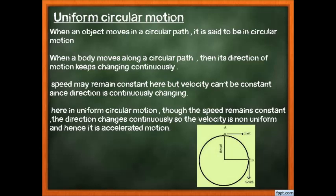In uniform circular motion, the speed remains constant but the direction changes continuously, so velocity is non-uniform. Therefore it is accelerated motion. Whenever we talk about circular motion, we say uniform speed — because speed can be uniform — but velocity is not uniform, and since velocity changes continuously, it is accelerated motion.